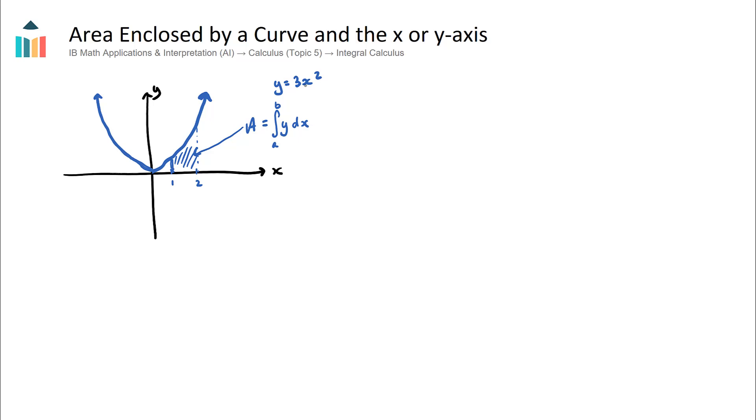And what we can do is we can substitute in what our function is, we know that our area, this area up here, will be equal to the integral from 1 to 2, and we know that y is 3x squared, we want to integrate this with respect to x, and this is just a basic definite integral now.